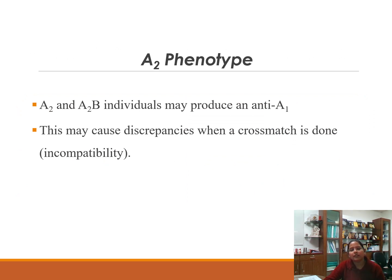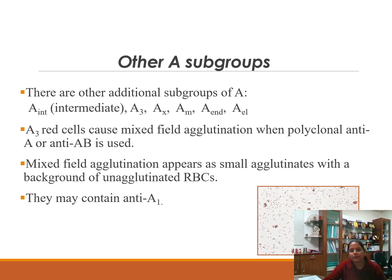A2 and A2B individuals may produce anti-A1, which can cause a discrepancy when a crossmatch is done — mostly detected at the time of crossmatching. Other A subgroups include A-intermediate, A3, Ax, Am, Al, etc. A3 red cells cause mixed field agglutination when polyclonal anti-A or anti-AB antisera is used — small agglutinates appearing against a background of non-agglutinated RBCs.